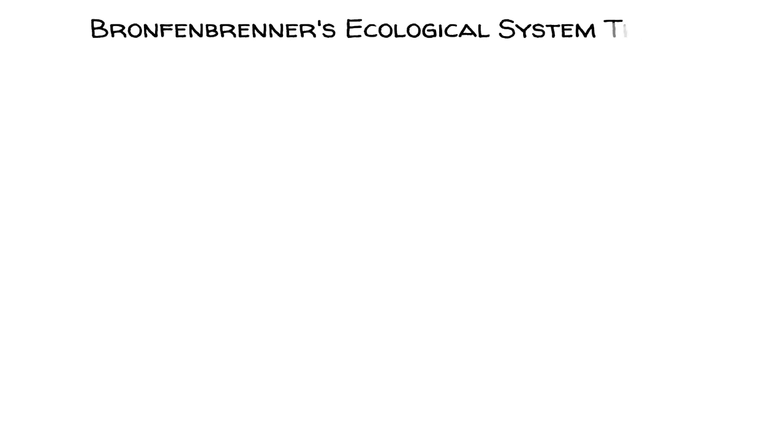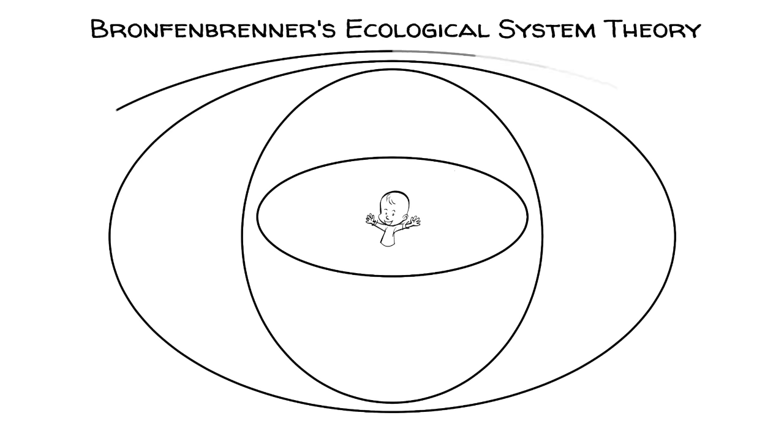Bronfenbrenner's ecological system theory conceives that a child is influenced by five ecological forces.